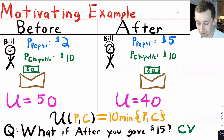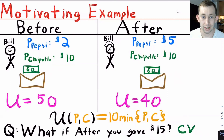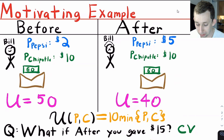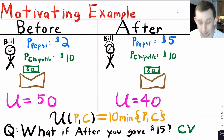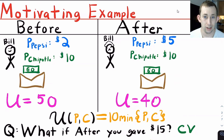His utility is 10 times the number of bundles, where a bundle is one Pepsi and one Chipotle bowl. Before the price change, if Bill faces the prices of $2 for a Pepsi and $10 for a Chipotle bowl, he's got $60 in his wallet and a bundle costs $12. He can afford five bundles, giving him a utility of 50.